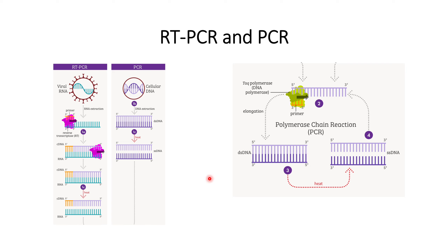When the double-stranded DNA is formed, it follows the same process: heating converts the double-stranded DNA into single-stranded DNA, then primers bind to each single-stranded DNA, and Taq polymerase continues the addition of nucleotides. This is how with each cycle, each single-stranded DNA is replicated. After about 15 to 20 cycles, we will have a sufficient amount of DNA to do the experiment and get the required result.